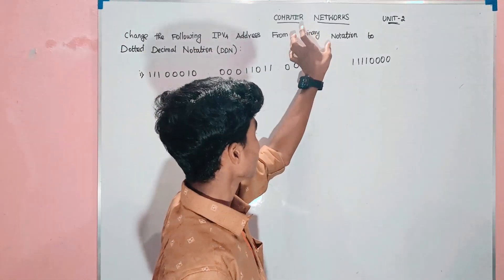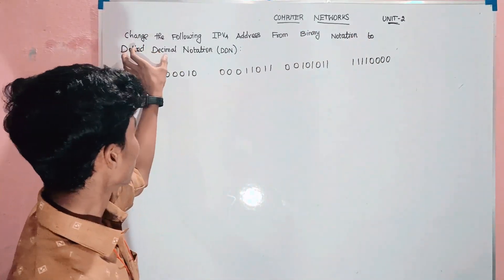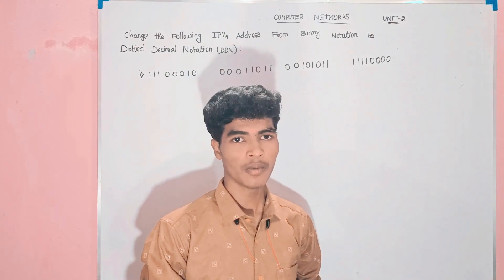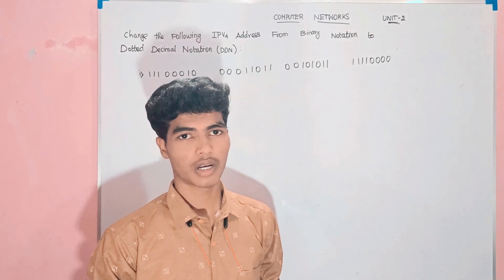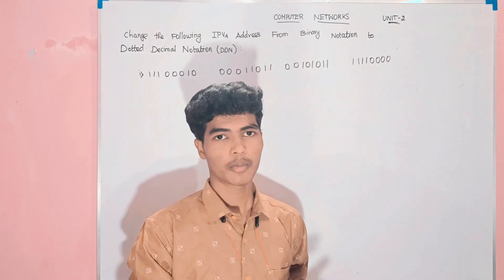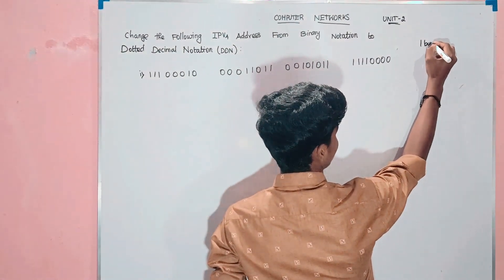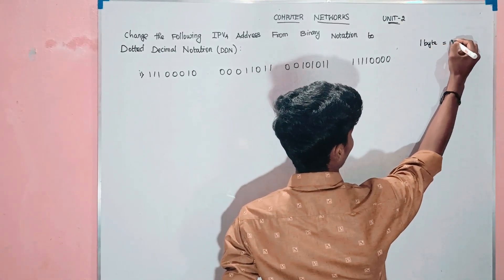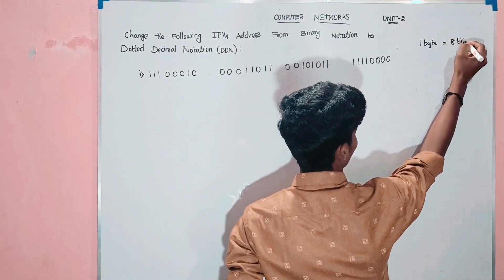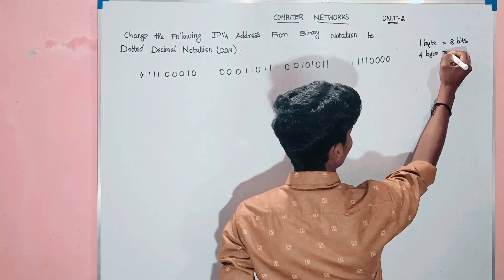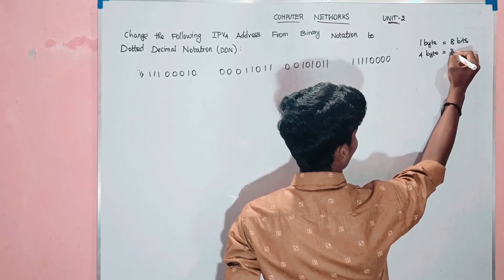If you say IPv4, the address is in binary notation. The dotted decimal notation will change the data. So binary notation is one of the 32-bit address or 4-byte address. One byte is equal to 8 bits. Four bytes is equal to 4 into 8, 32 bits.